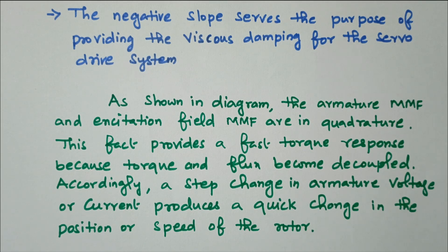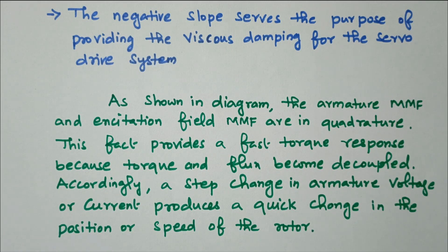In this video we discussed the DC servo motor: its construction, the key principle of quadrature armature MMF and field MMF, and the speed-torque characteristics — linear with a large negative slope — which provide more viscous damping. Because of this quadrature, any small change in armature current or voltage is immediately responded to by the motor in terms of position or speed. Subscribe the channel for more videos. Soft copy of this material is available in the drive — link in the description box. Thank you for listening. All the best for your examination.